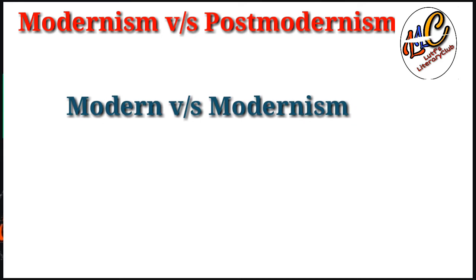Modernism ko samajhne se pehle hume yeh samajhna chahiye ke 'modern' aur 'modernism' mein kya difference hai. Yeh do words ek jaise dikhte hain par ek doosre se kaafi different hain. 'Modern' ko historical sense se define karein to modern matlab aap ab previous values aur notions ko follow nahi karte. Is liye hum har age ko modern age kehte hain. Aapke old relatives ne aapko modern generation kaha hoga kyunke aap unki values follow nahi karte.